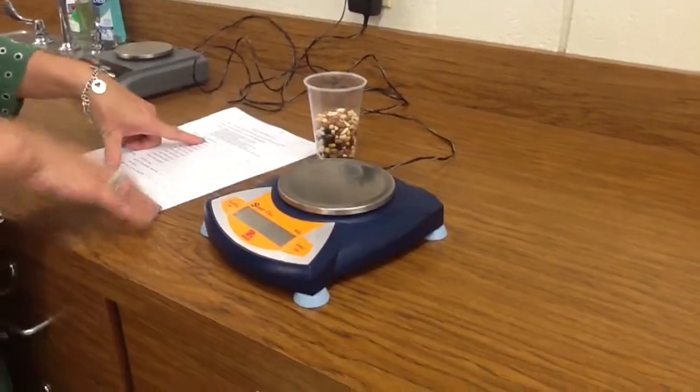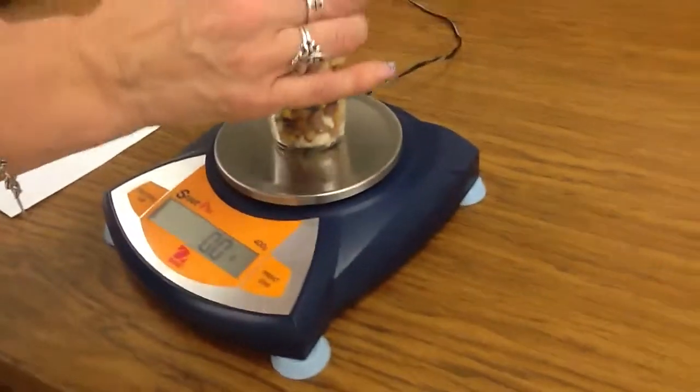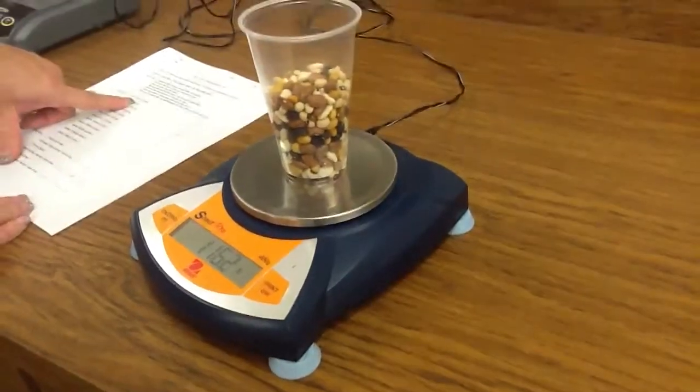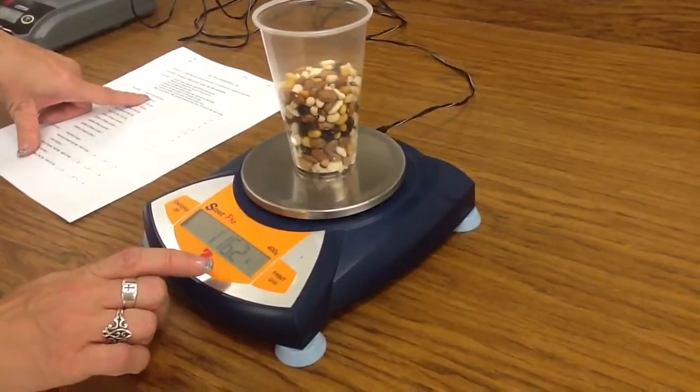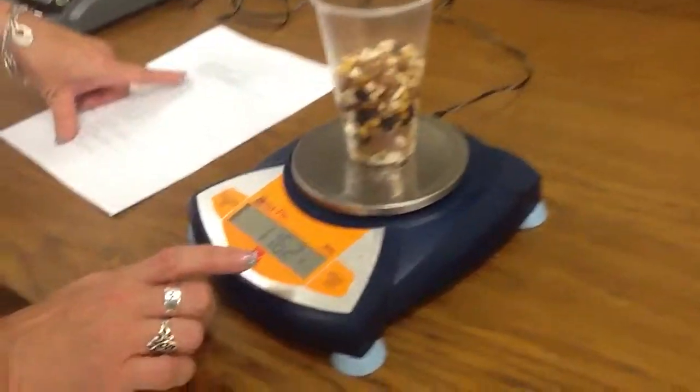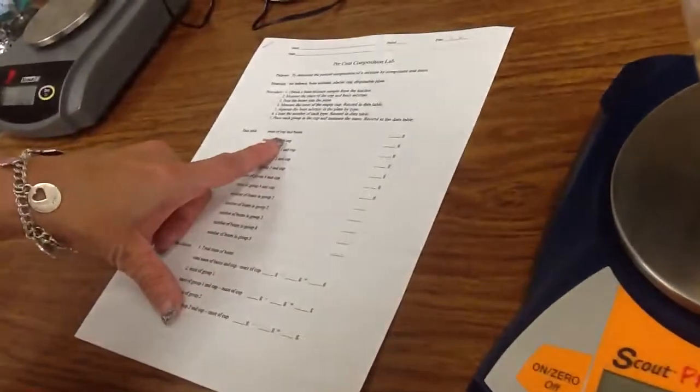The first thing that you're going to do is take a mass of the cup and the beans. You're just going to record this weight. My weight says 116.2. You're going to put that right beside the grams. It says mass of beans and cup.